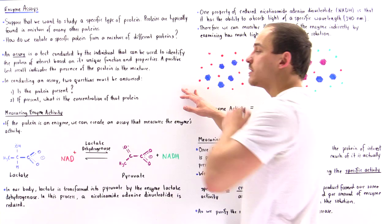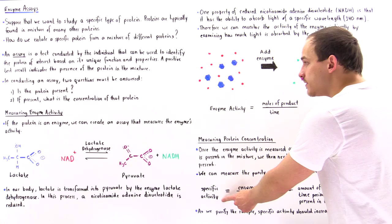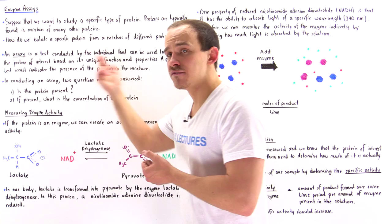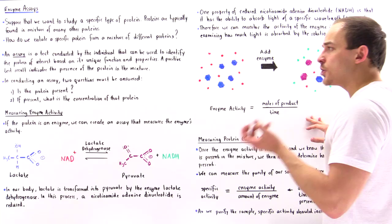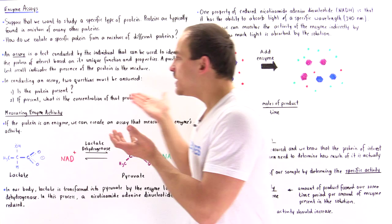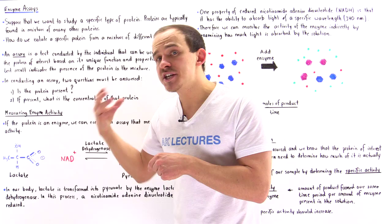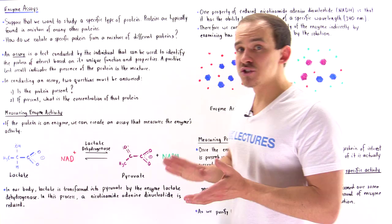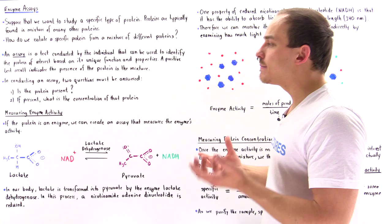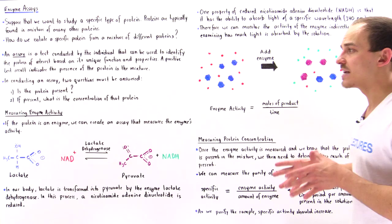Once we know the enzyme activity and the concentration of that protein in our sample, we can then calculate the specific activity. During our purification process, when we're isolating that specific protein, we can use the specific activity value to determine how pure our sample actually is. So we conduct our protein assay, confirm the protein is in the sample, and then begin the purification process — using the specific activity value throughout.